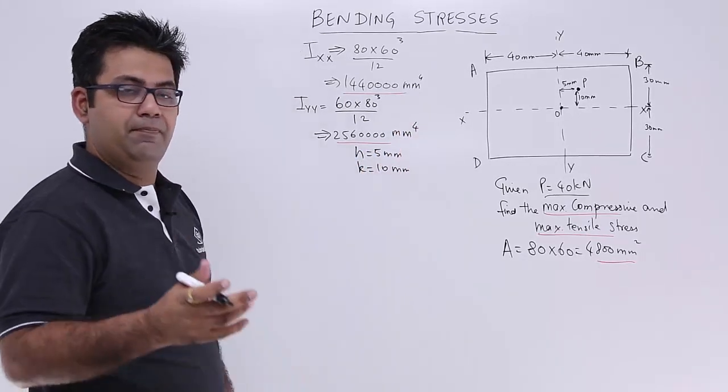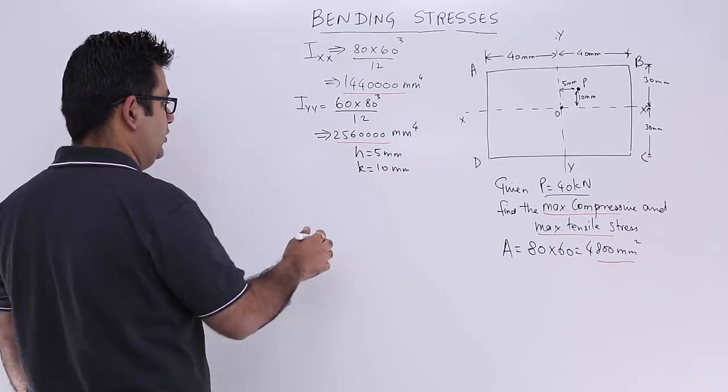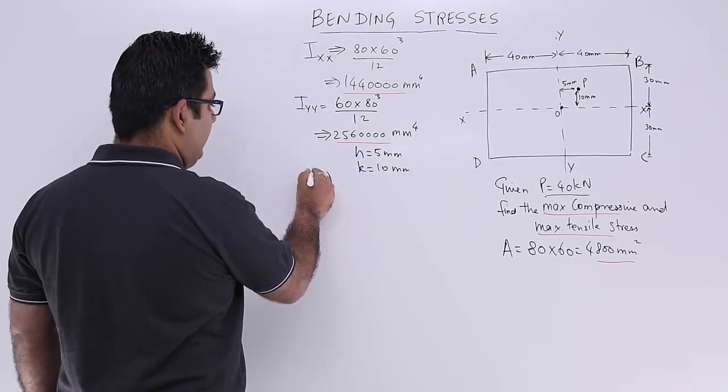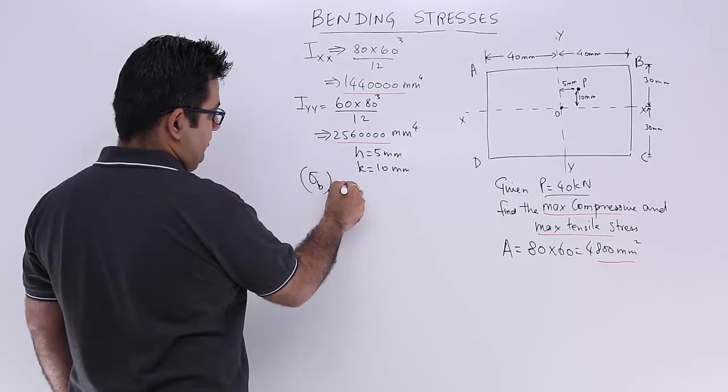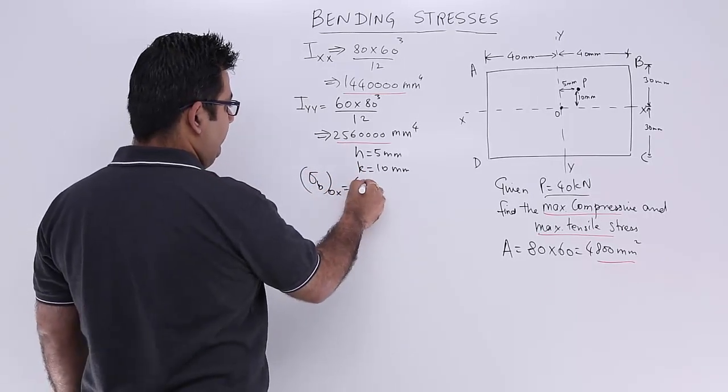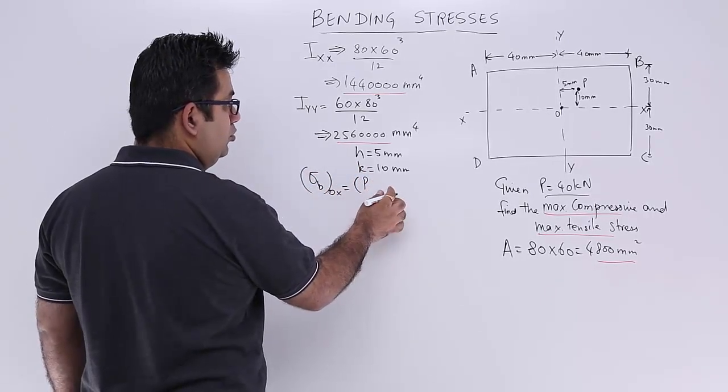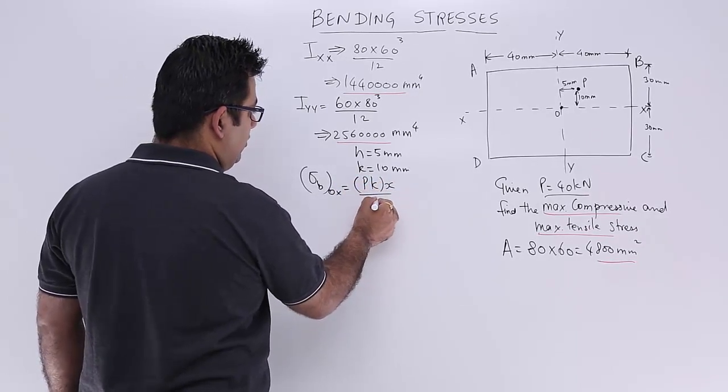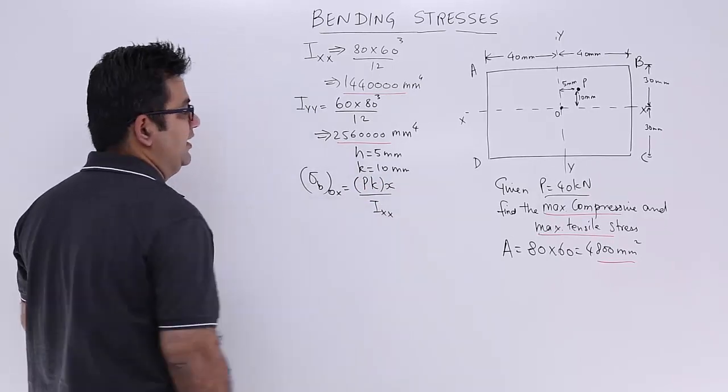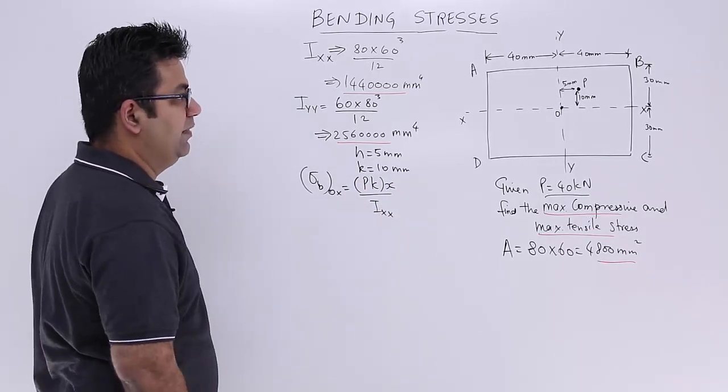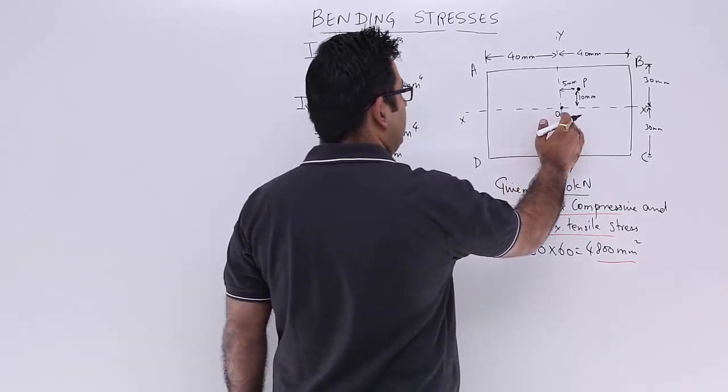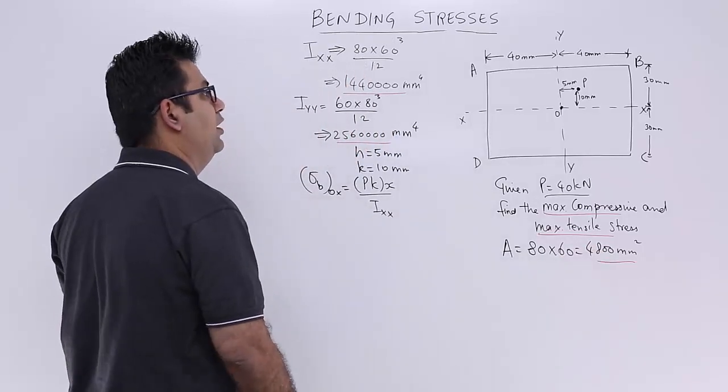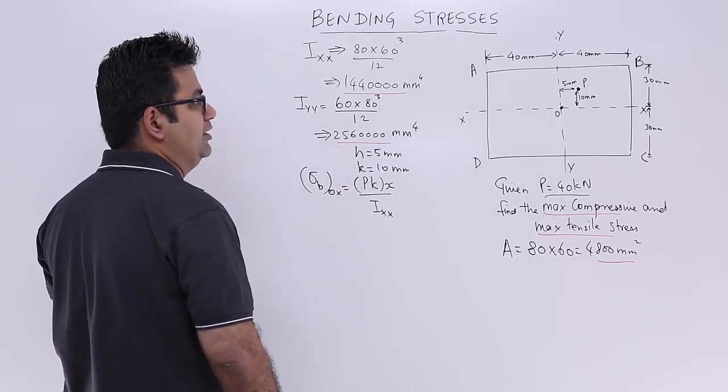So the maximum bending moment when the bending is taking place about OX: this is P into K into X upon Ixx. So when bending is taking place about this particular axis, that is OX.